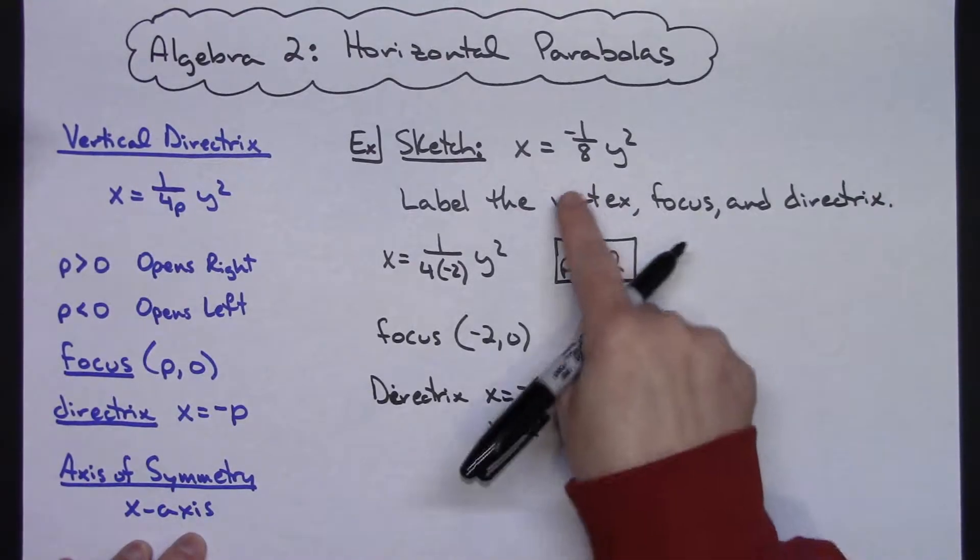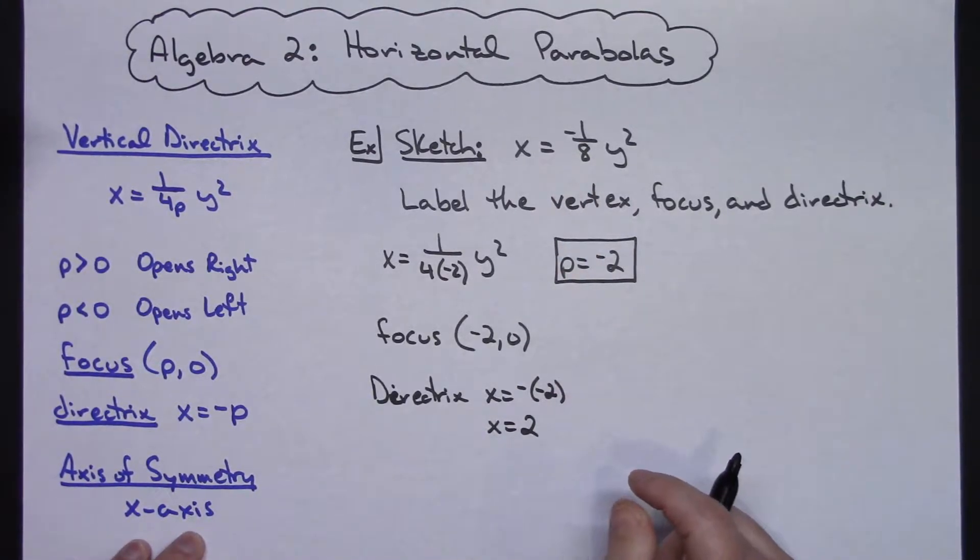And I am not shifted away from the origin here, so my axis of symmetry will be the x-axis. That's going to make my vertex then at 0, 0.